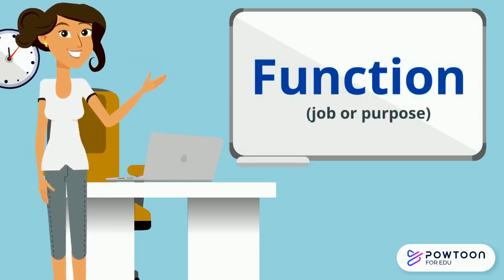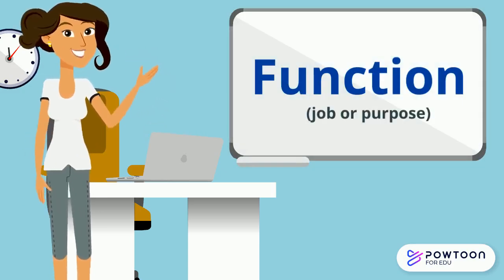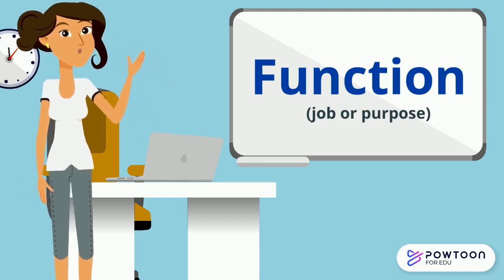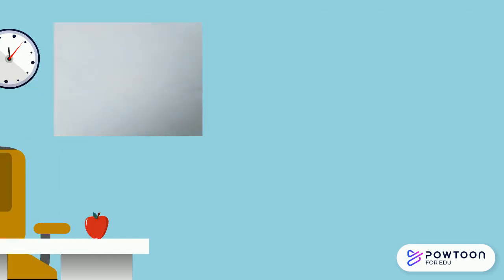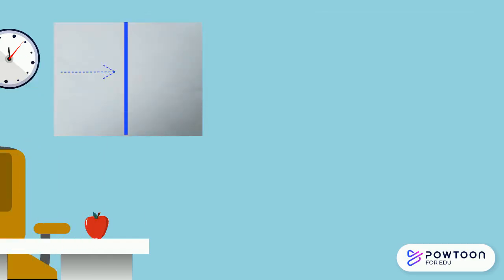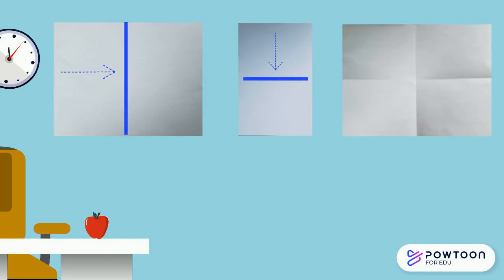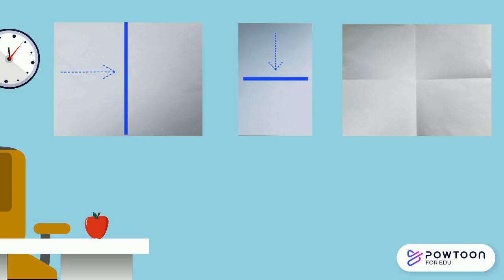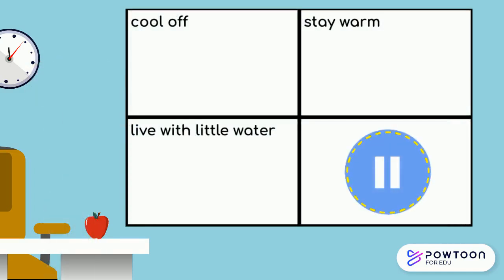We're going to do some drawing today, so before we begin our lesson, you'll need to create a table on a piece of paper. To make sure you have enough space in each box, you can fold your paper in half, then fold it in half again. When you open it up, you'll have four boxes that are all the same size, and you'll write one heading in each box. Please pause the video now to create your table and write your headings.